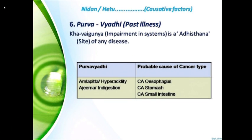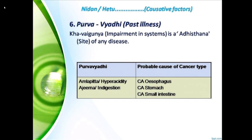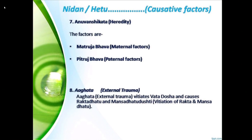Purvavadi — past illness — is also important. For example, amlapitta (hyperacidity) recurring again and again can lead to CA esophagus or CA stomach. Similarly, agni-manda or indigestion, when carried repeatedly, contributes to cancer. Hereditary factors are important too — if a mother has had breast cancer, her daughter may be prone to developing breast cancer as well.